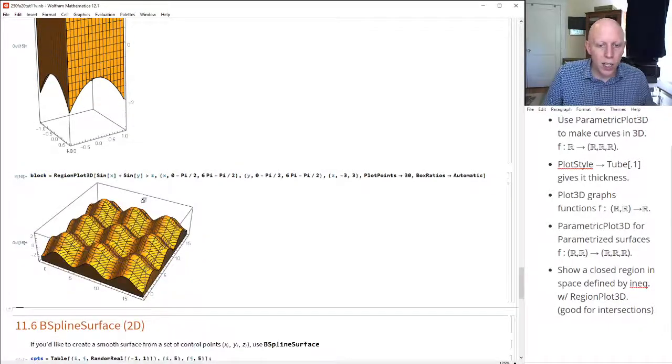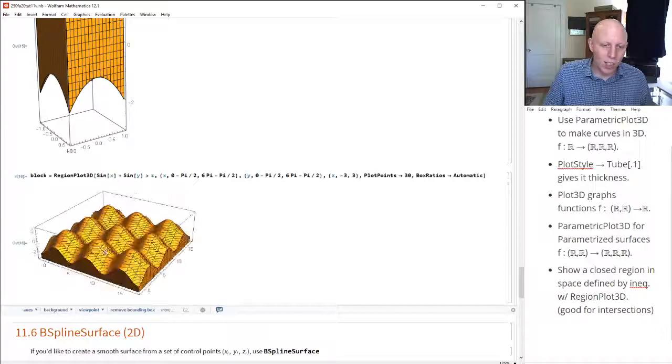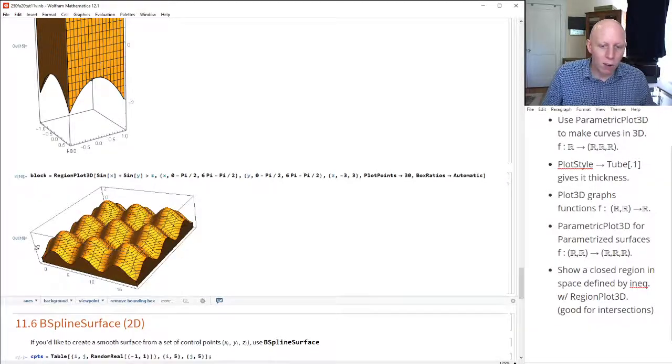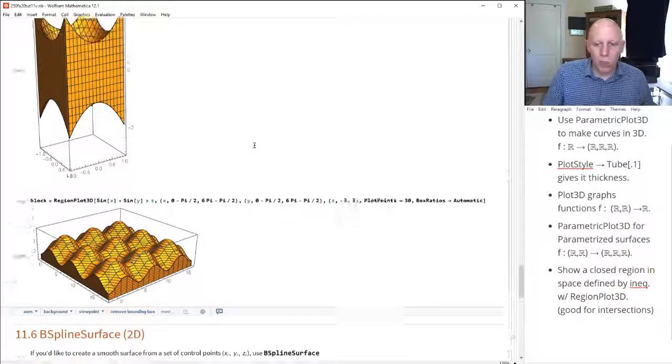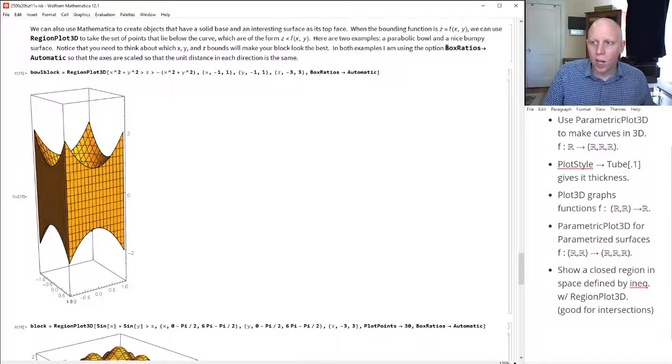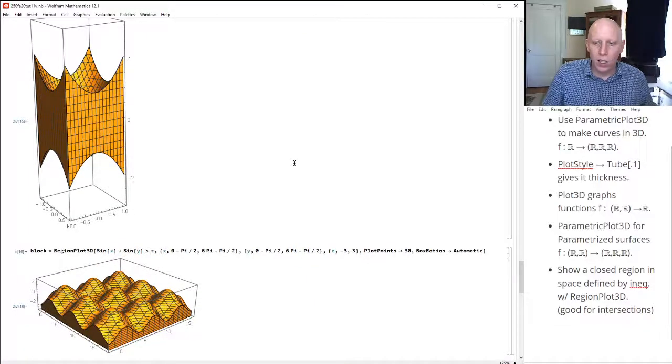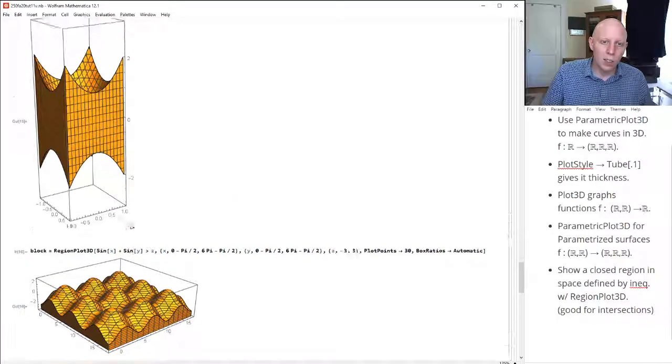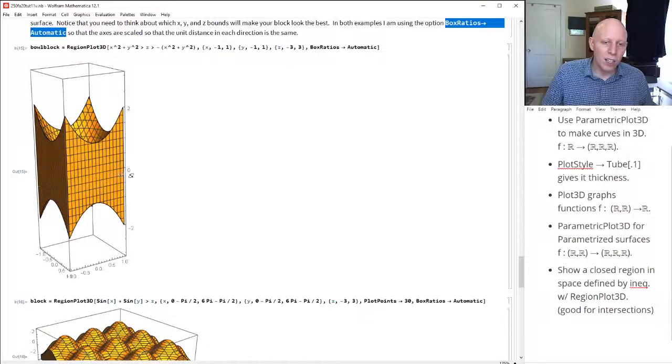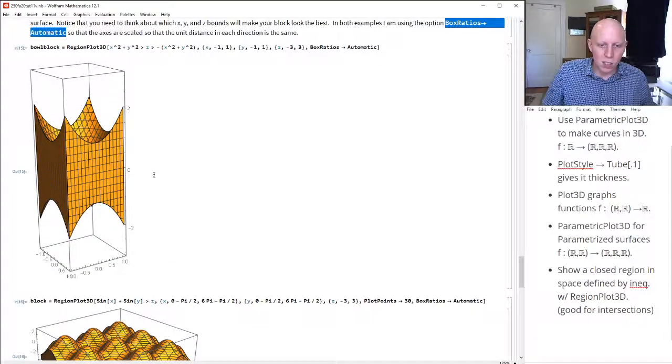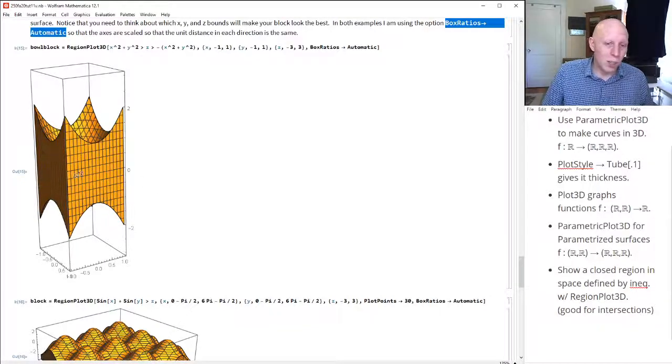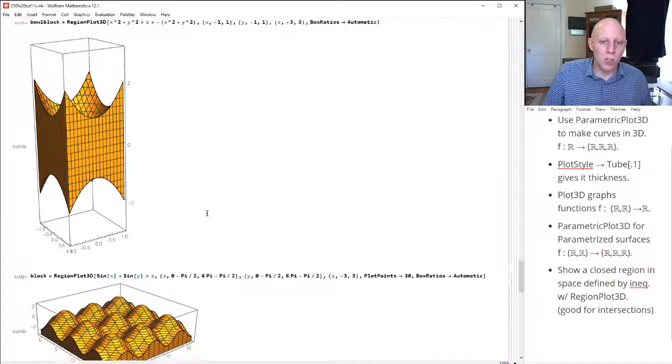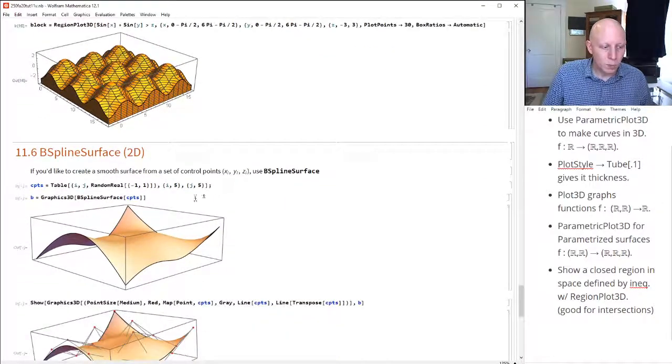Here's one more example. Here we see the bumpy region that is z is equal to sine of x plus sine of y. I'm using a special option here, box ratio is automatic. And what that does is it ensures that the length of one unit in each of the dimensions is the same. If you don't put that in there, then Mathematica chooses for you what the dimensions are. And sometimes it distorts it more than you would expect.